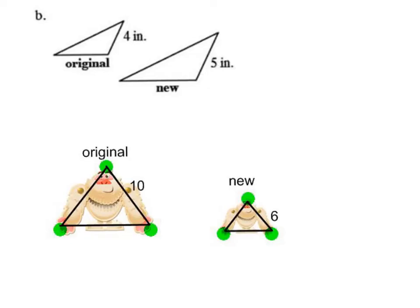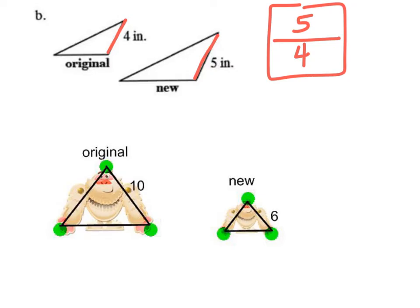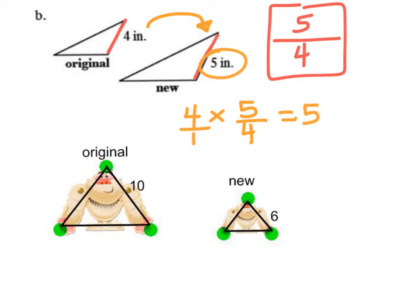For the first problem, remember to find a scale factor you take the new length, which was 5, over the original length, which was 4. So my scale factor is 5/4. To prove it: 4 times 5/4 — putting a 1 under the 4 and multiplying: 4 times 5 is 20, over 1 times 4, which is 4. 20 divided by 4 is 5. That works.